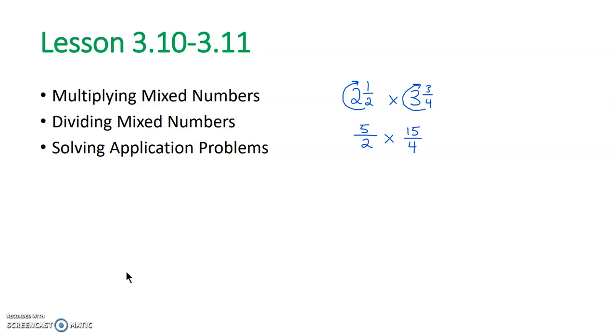So 2 and 1/2 is 5/2, and 3 and 3/4 is 15/4. What we cannot do here is cross-reduce for this example. So that happens sometimes where we can't cross-reduce, so we're going to go ahead and multiply our numerators. 5 times 15 is 75, and 2 times 4 is 8. So we end up with an improper fraction as our answer, so we need to make sure that we put that improper fraction back as a mixed number. So 8 goes into 75 nine times. 9 times 8 is 72, so the leftover is 3. 75 minus 72 is 3, out of 8, so 9 and 3/8.